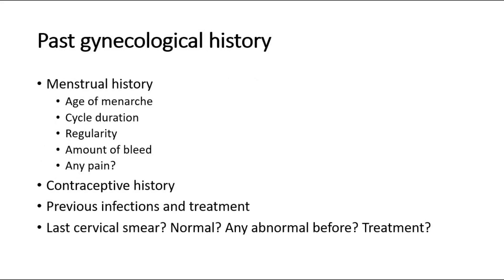For past gynecological history, we have to ask about the menstrual history: at what age did they reach menarche, how long is the menstrual cycle duration every month, is it regular, how is the amount of bleeding — by asking how many pads they usually use — and is there any pain during the menstrual period? Ask about contraceptive history, any previous infections such as pelvic inflammatory disease and the treatment given, when was their last cervical smear, and how was the result.